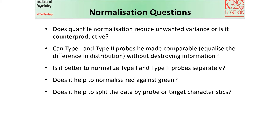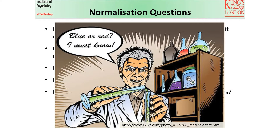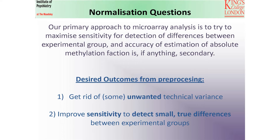Some of the questions we had: does quantile normalisation reduce unwanted variance or is it counterproductive? Can type 1 and type 2 probes be made comparable by equalising the difference in distribution without destroying meaningful information? Is it better to normalise type 1 and 2 probes separately or together? Does it help to adjust for dye bias? And does it help to split the data by probe or target characteristics? Before getting too obsessive about it, we thought it would be useful to highlight what we want to achieve first. Our primary approach is to maximise sensitivity for detection of differences between experimental groups, and accuracy of absolute methylation fraction is secondary.